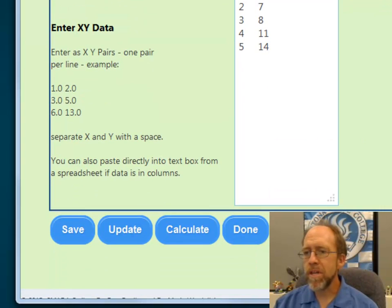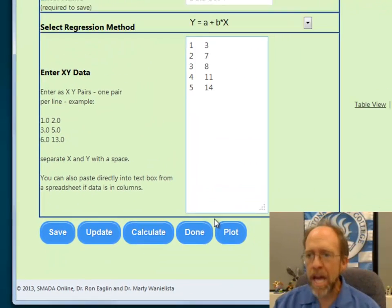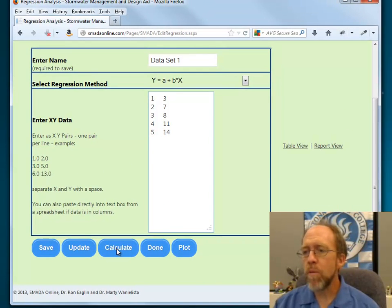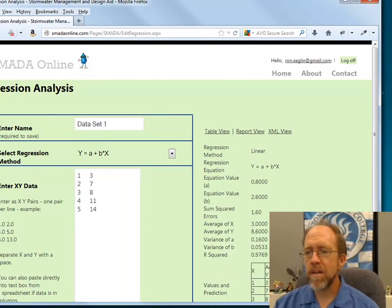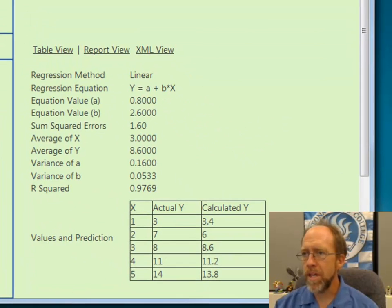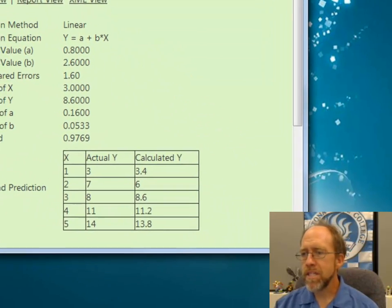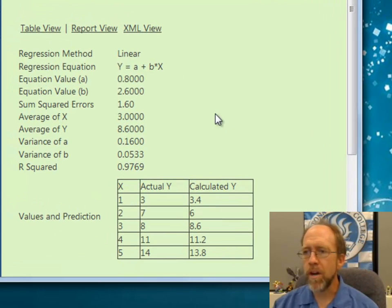Now I'm going to scroll down a little bit because the next button I want to hit is the calculate button. I will click calculate, and I'm going to spread this out a little bit so it's easier to read. It's going to create this little report view that you see right here. I did this with the linear regression. Here's my values, my actual y's, and my calculated y's.